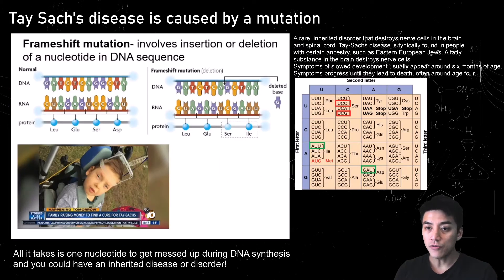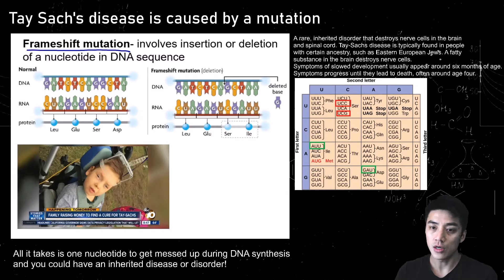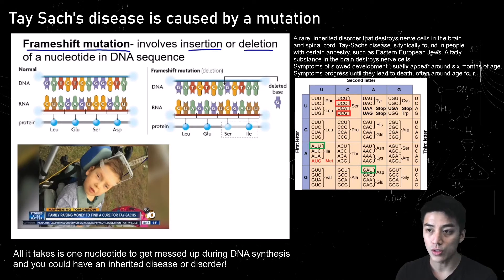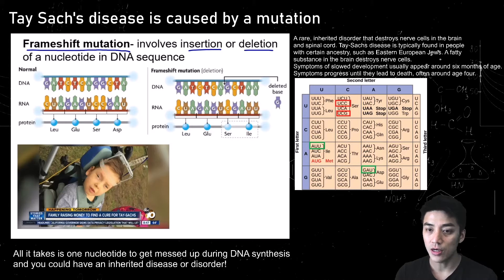A frame shift mutation involves the insertion or deletion of a nucleotide in a DNA sequence. An example of this is Tay-Sachs disease, which is a disorder that destroys nerve cells in the brain and spinal cord. The boy pictured has no mobility and is confined to a wheelchair. Symptoms usually appear at a very young age and the children end up dying at around age four.